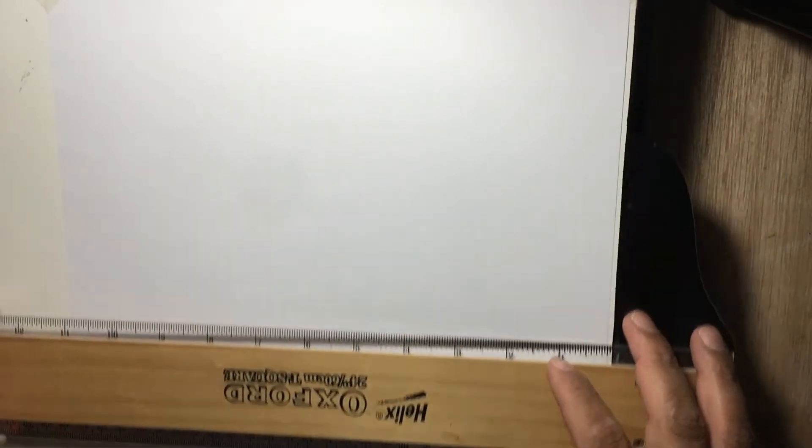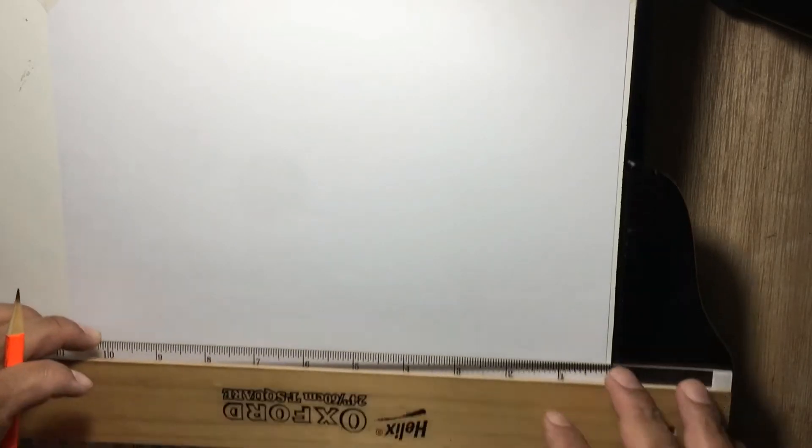Okay, to construct an auxiliary plan of a right hexagonal prism, step one we want to start off with the plan then the front elevation. So we start off by setting off a baseline. Please, I will start here.